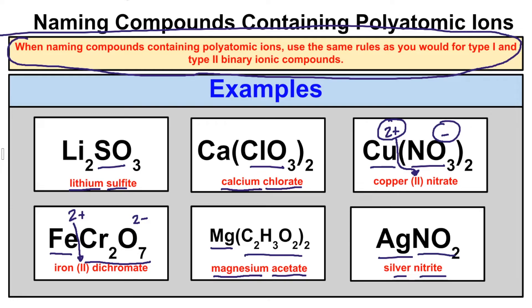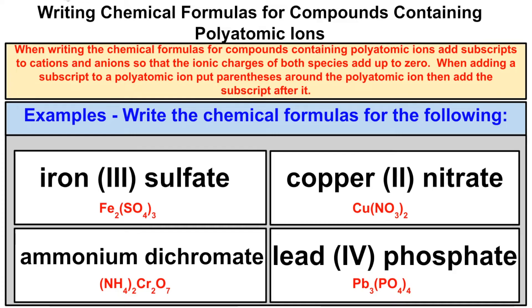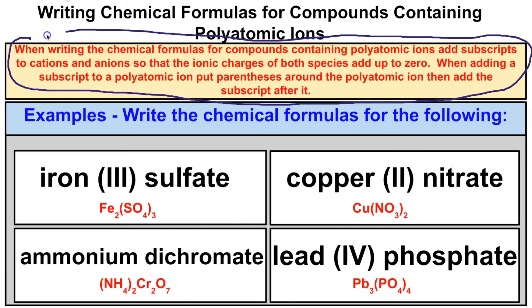What if you're given the name and asked to write the chemical formula? When writing chemical formulas for compounds containing polyatomic ions, we add subscripts to the cations and anions so that the ionic charges of both species add up to zero. Whenever you have positive and negative ions bonded together, you get their charges to add up to zero by adding subscripts. But when you add a subscript to a polyatomic ion, you must put parentheses around it first, then add the subscript after.